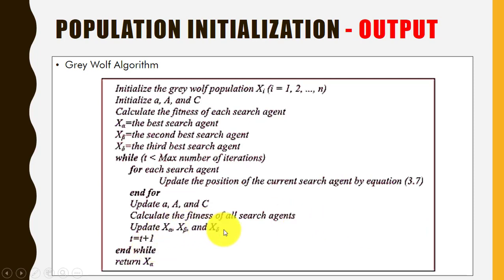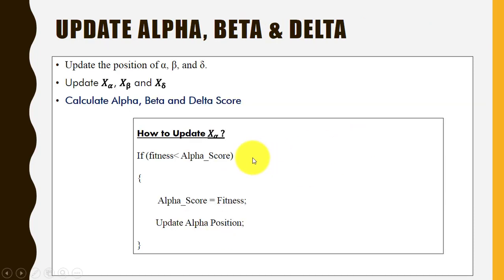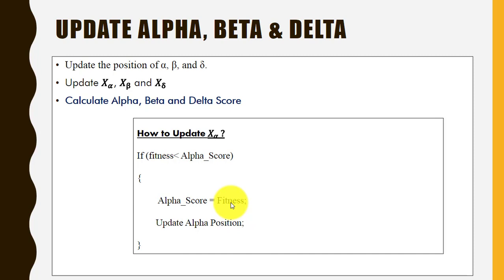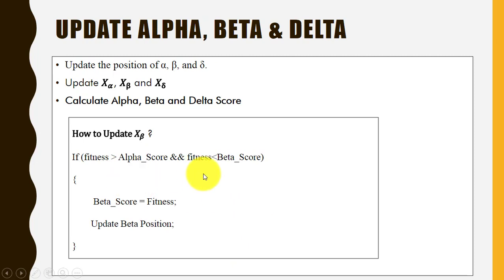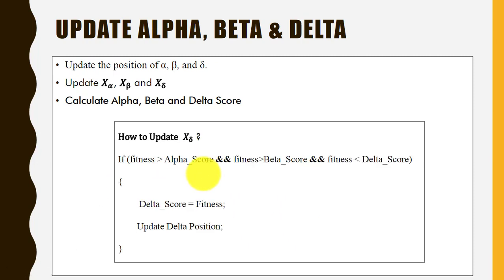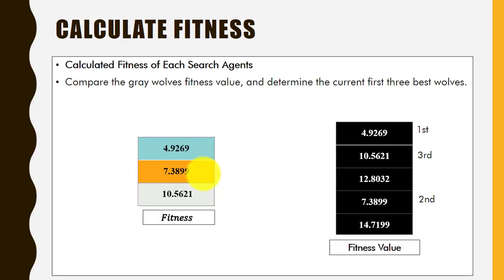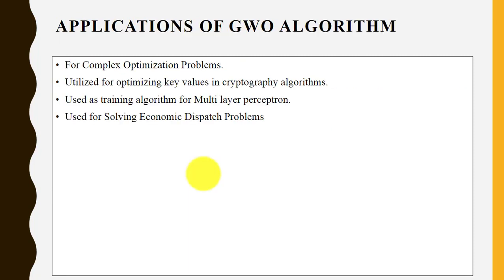To update the position of the alpha wolf, we compare the alpha score with the fitness value: if the alpha score is greater than the fitness value, we consider the fitness value as the new alpha score. Since this is an optimization algorithm, we need the minimum (optimum) value. If the fitness value is less, it becomes the new alpha score. We update the positions of the beta and delta wolves in the same way, and repeat this process for all wolves.